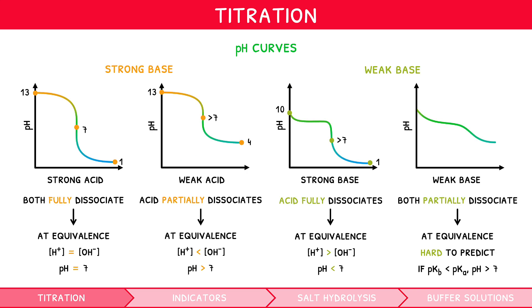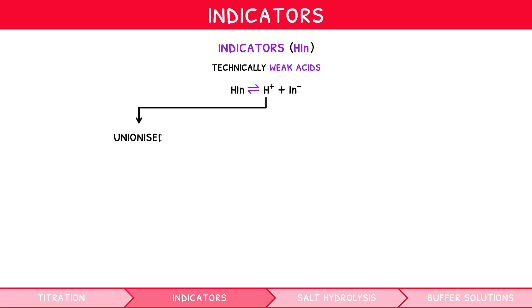But how do we detect the equivalence point since our eyes cannot see pH? Well, this is the role of an indicator. Indicators, represented by HIn, are technically weak acids, and so dissociate via the equation HIn ⇌ H⁺ + In⁻. The unionized and ionized forms have different colors.